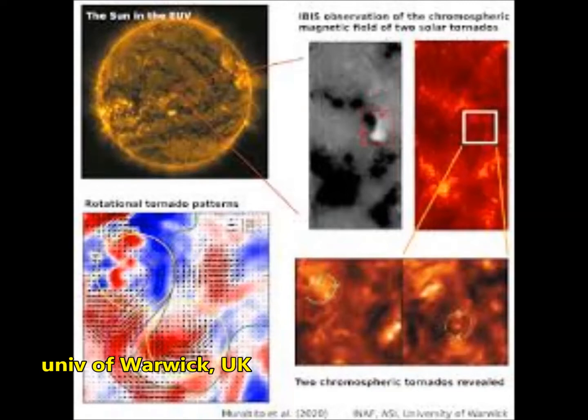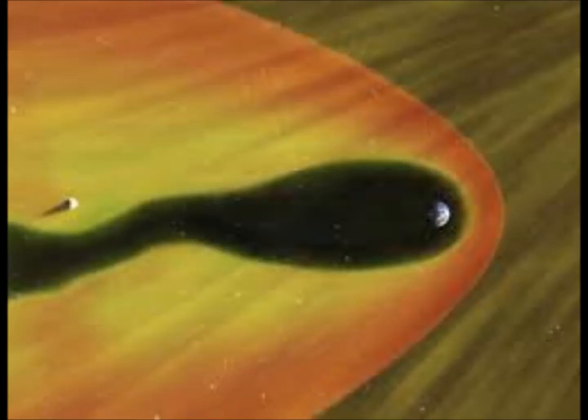This work by a team including physicists from the University of Warwick and the Italian National Institute of Astrophysics, INAF, provides the first direct observation of the Sun's chromosphere and magnetic field to reveal the magnetic nature of these solar tornadoes.